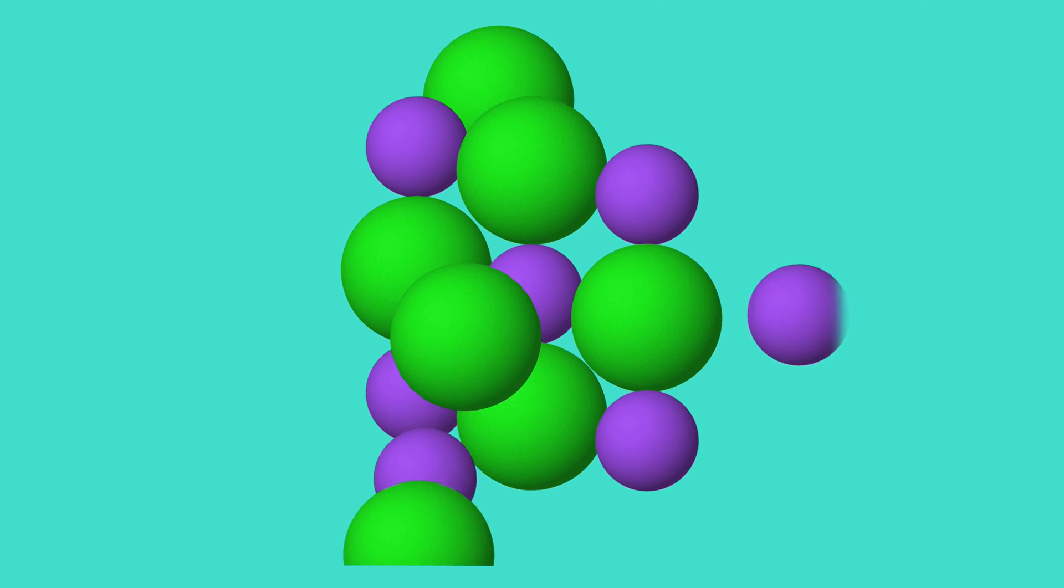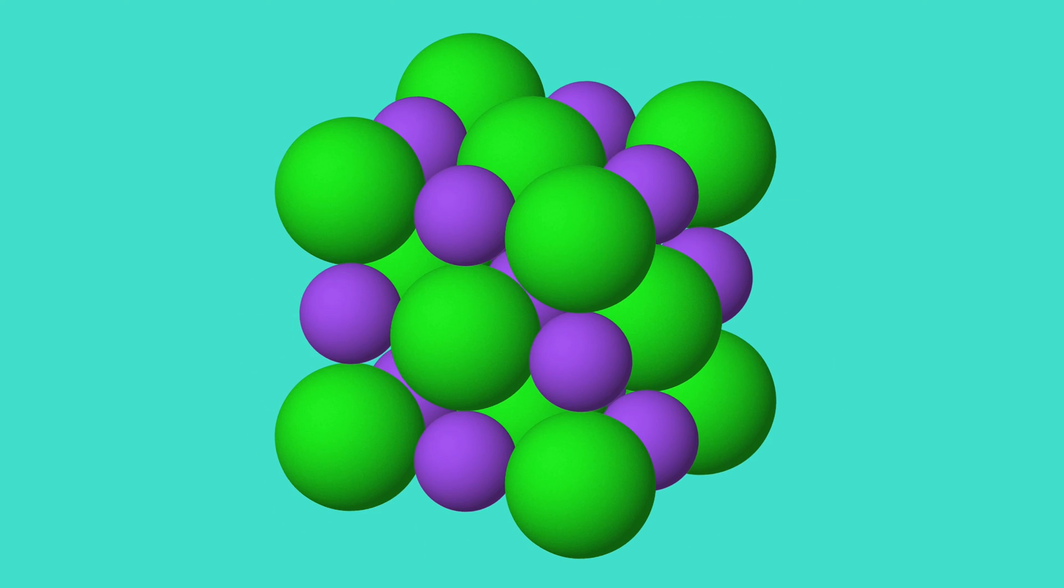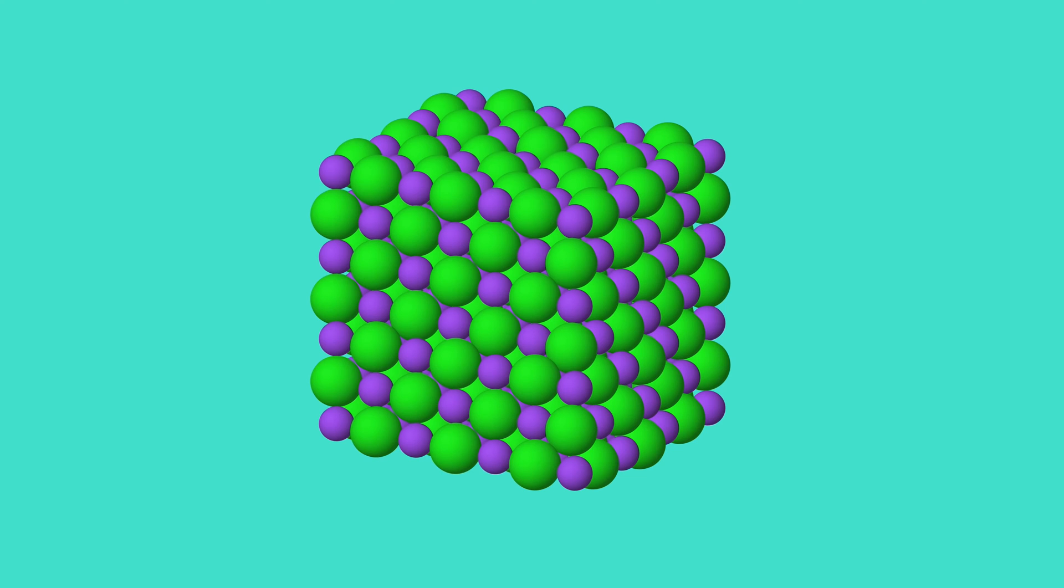And no matter how large this lattice gets, it always has a one-to-one ratio of sodium ions to chloride ions.